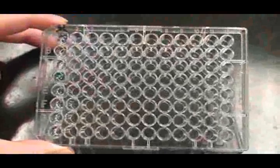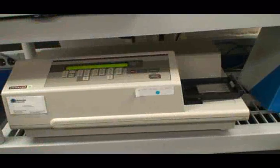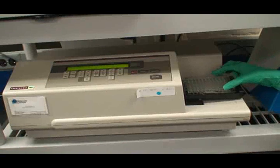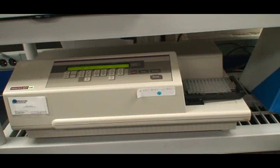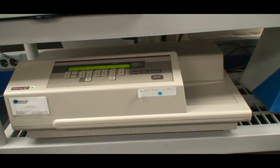Determine the amount of color formation in each well qualitatively by observing it visually. Set the wavelength on the plate reader to scan at 450 nanometers and ensure the printer is turned on. Press the drawer button to open the drawer. Place your plate in the drawer and press the button again. Press read to start the instrument.